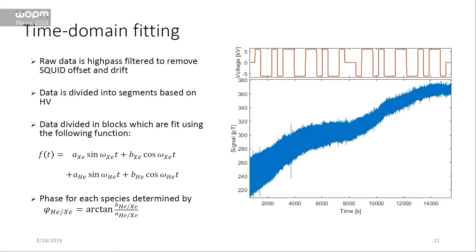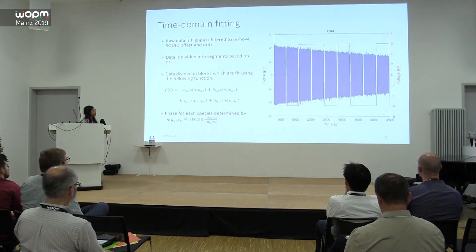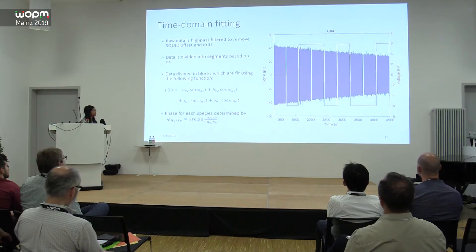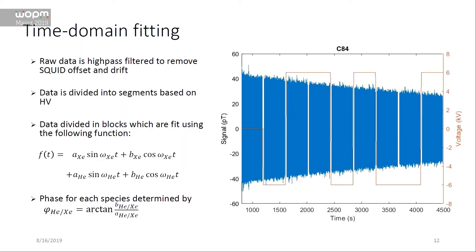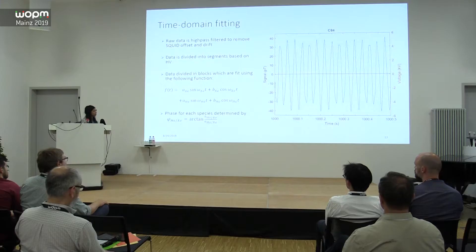For frequency determination, the SQUID output shows the spin precession signal with a baseline drift. The electric field is applied in a specific pattern shown at the top. The first step is to apply a high-pass filter to remove the drift, then cut the data based on high-voltage segments, and perform a time-domain fit. Zooming in, you can see two sine waves from the two species; we do a sine-cosine fit to each species to extract the phase per block.